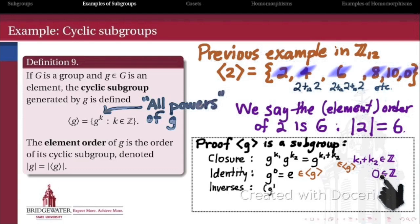For inverses: if we have g^k, its inverse is g^(-k). Since for any integer k, -k is also an integer, g^(-k) belongs to the cyclic subgroup as well. So indeed the cyclic subgroup generated by an element — the set of all powers of that element — does in fact form a subgroup of G.